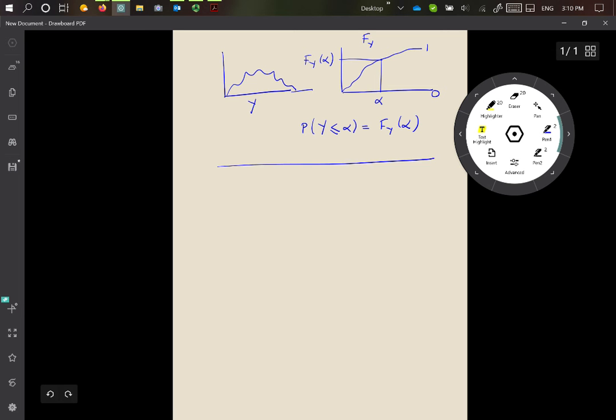Now, for an example, let's take the case of the uniform distribution. So let's have a random variable small u which is distributed as uniform in the range 0 to 1.